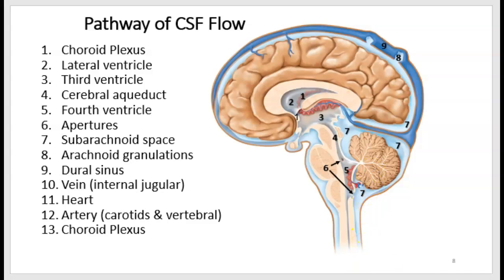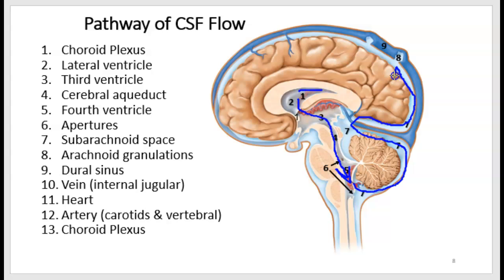Because of the continuous production in the ventricles by the choroid plexus, CSF flows in a very specific pattern. Within the brain, CSF flows from superior to inferior. But on the outside of the brain in the subarachnoid space, it flows from inferior to superior, and then it is reabsorbed into the blood — represented by the large blue structure on the outside of the brain, which is a vein, one of the dural venous sinuses.